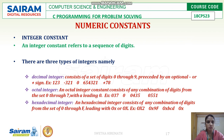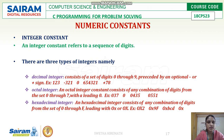Coming to numeric constants — integer constants. Integer constants refer to a sequence of digits. There are three different types: the first is decimal integer constant, the second is octal integer constant, and the third is hexadecimal integer constant.